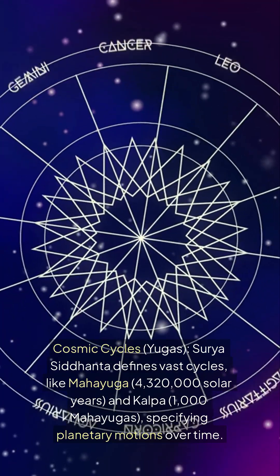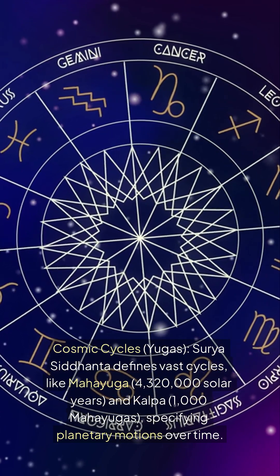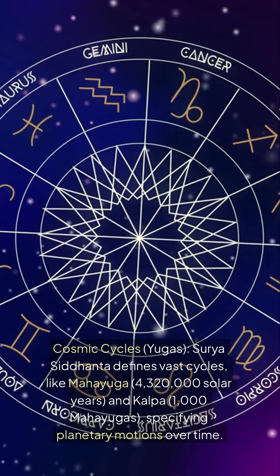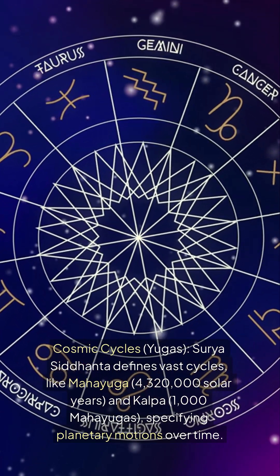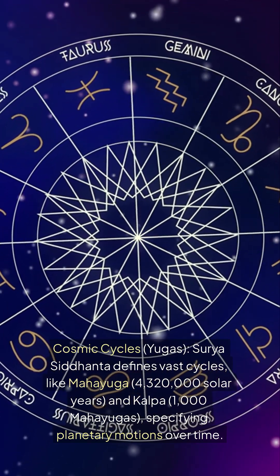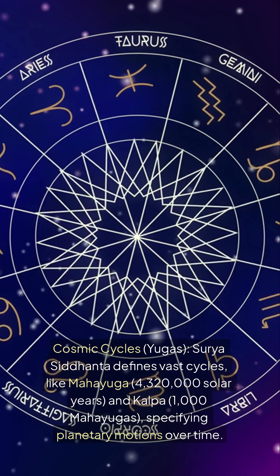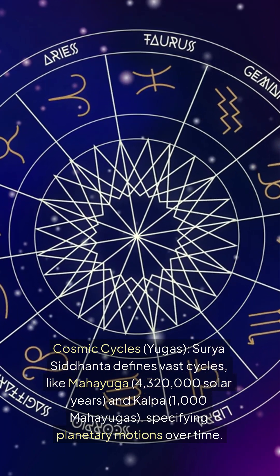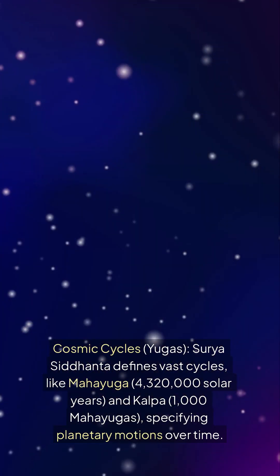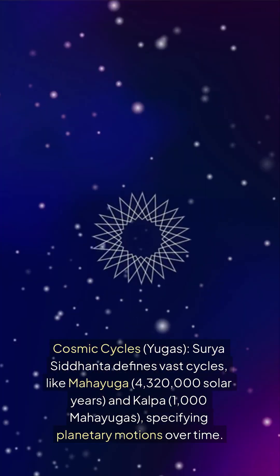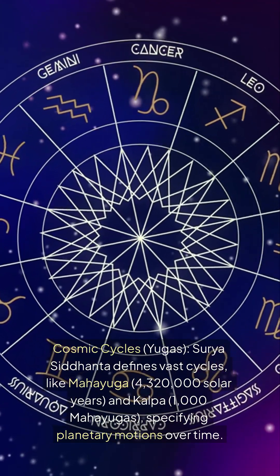Cosmic Cycles — Yugas: Surya Siddhanta defines vast cycles, like Mahayuga (4,320,000 solar years) and Kalpa (1,000 Mahayugas), specifying planetary motions over time.